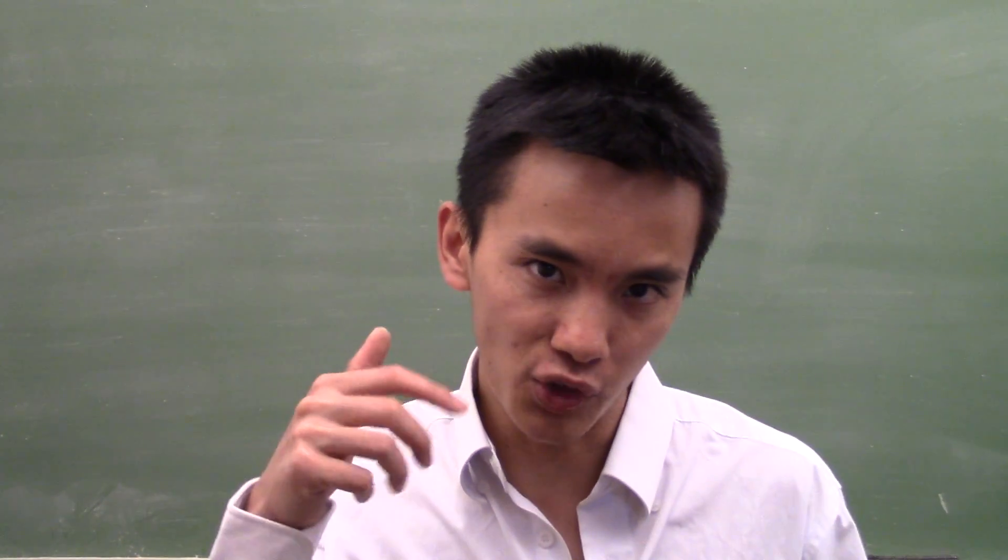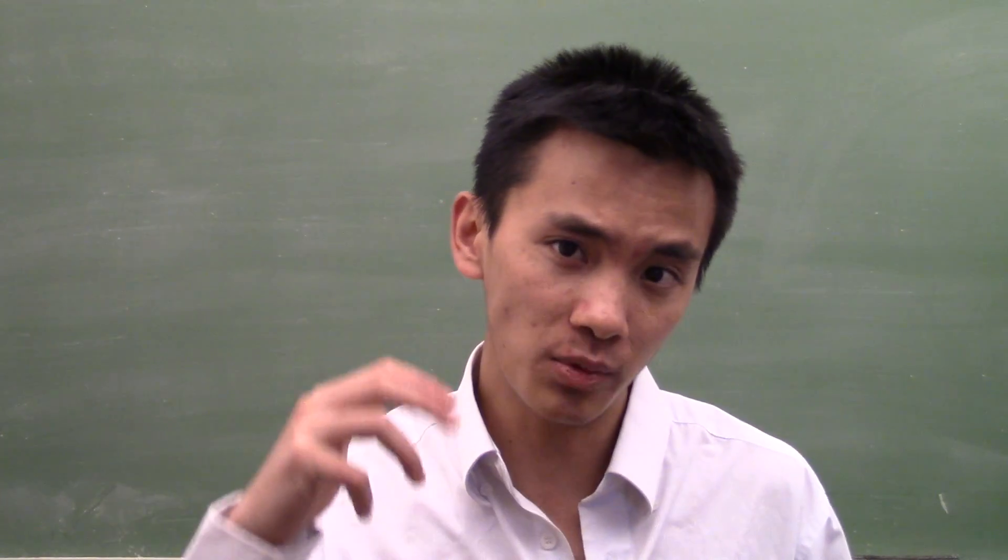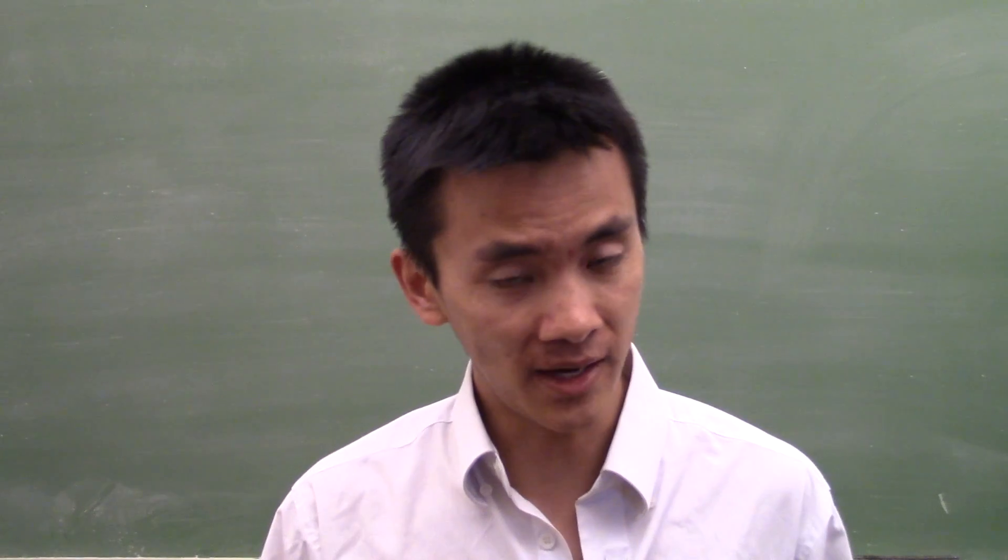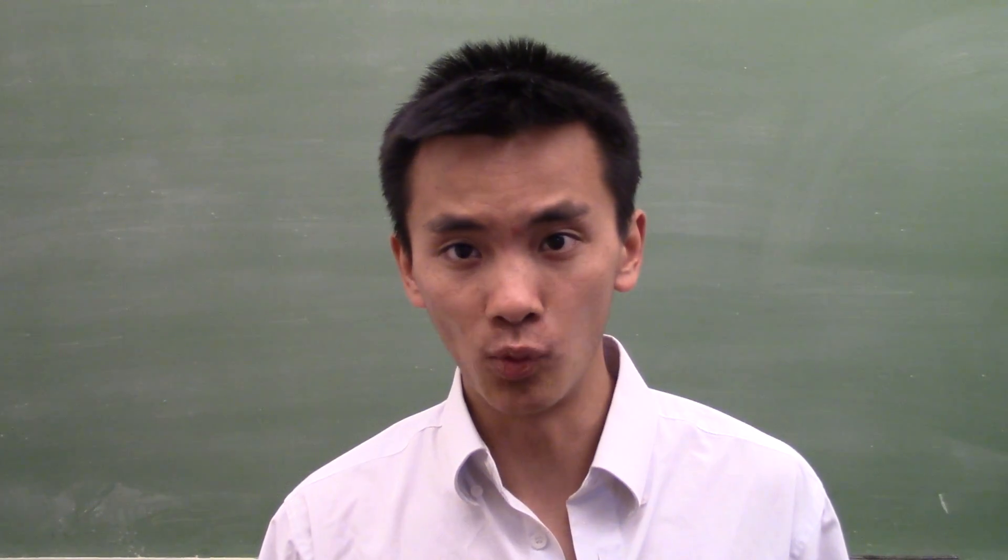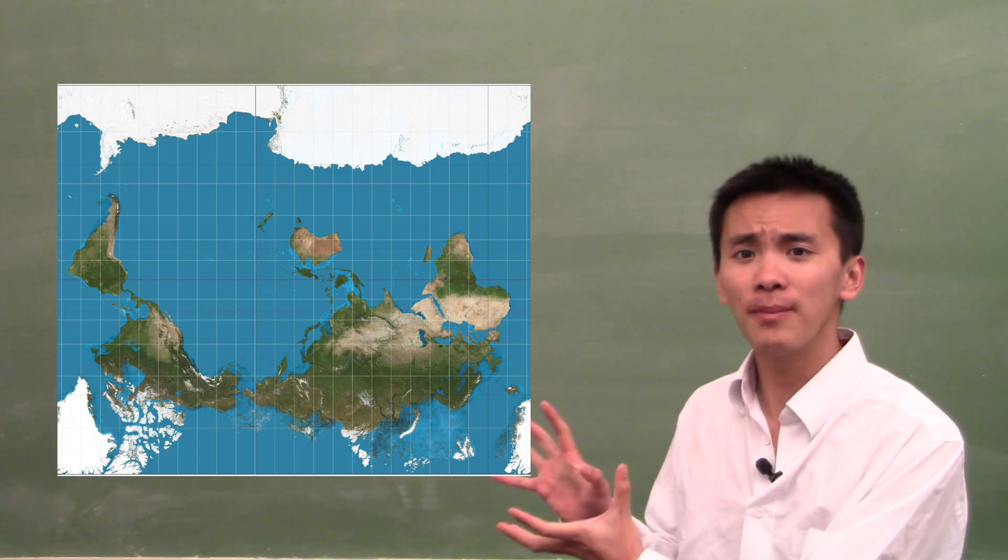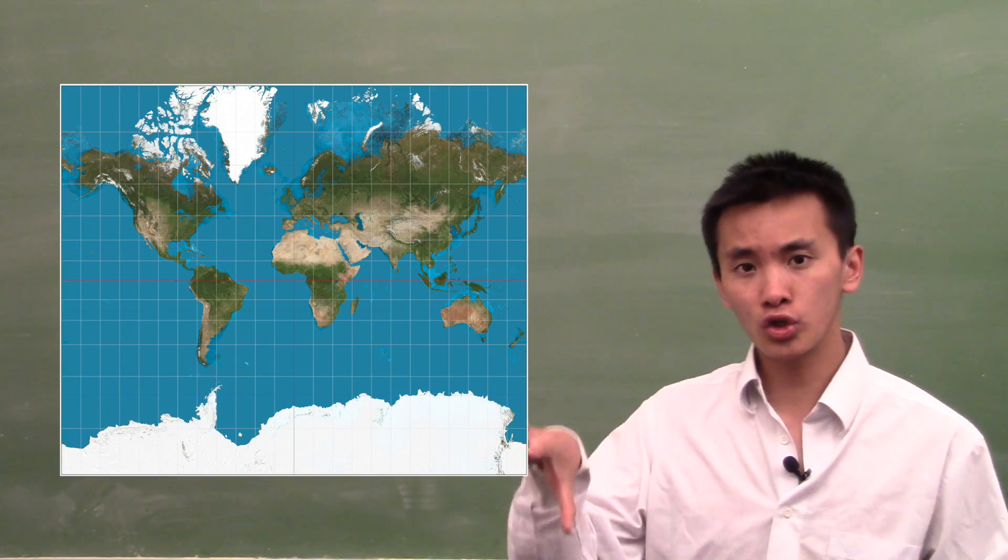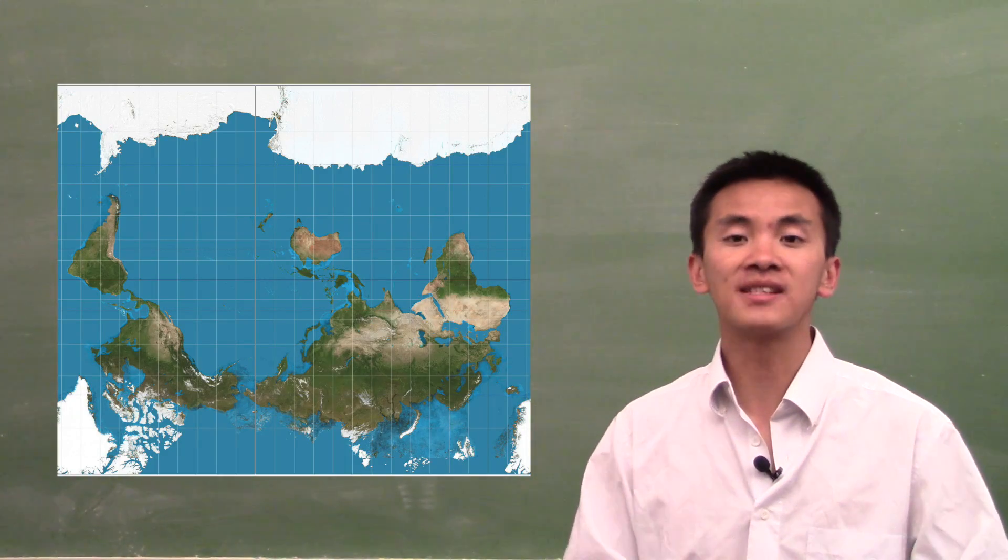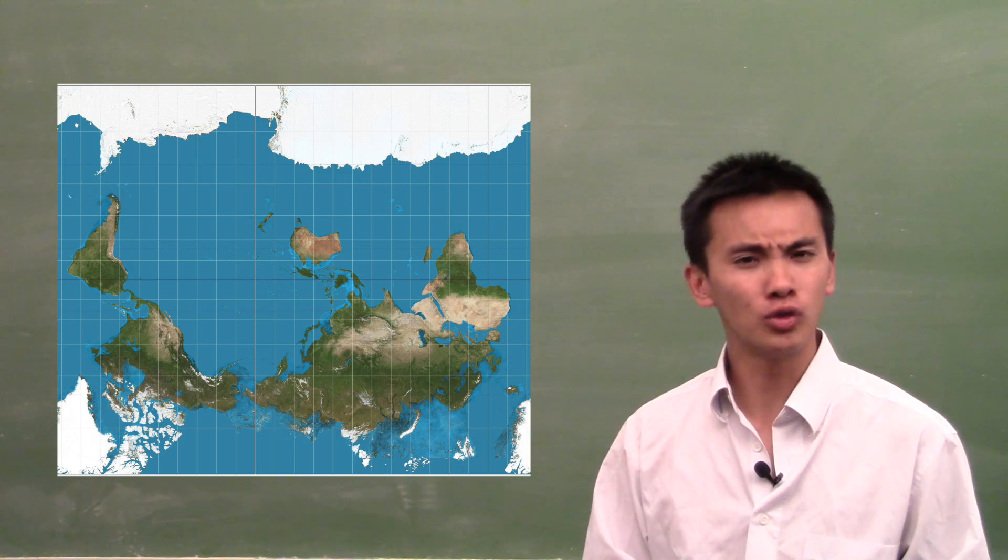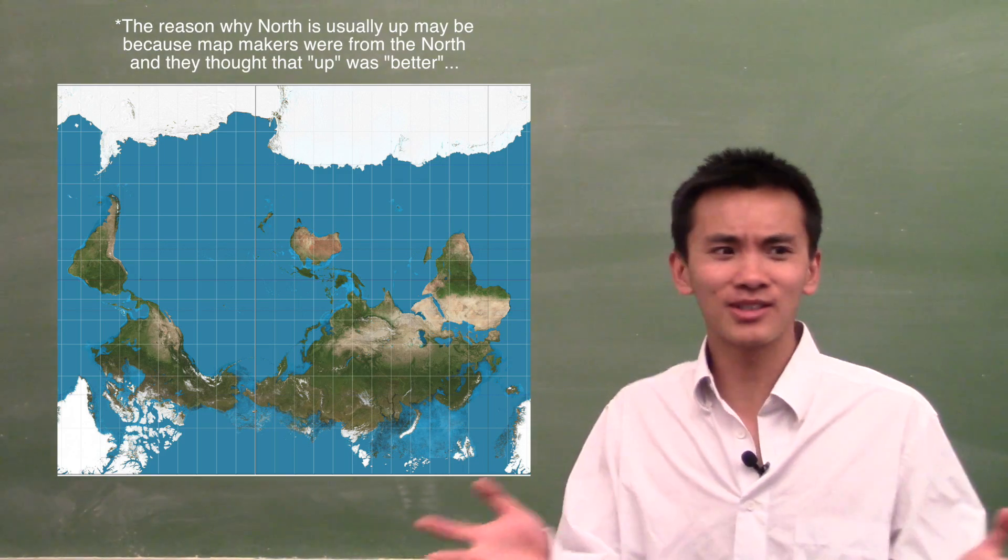The way we see the world affects the way we draw maps, and the way we draw maps affects the way we see the world. Now this map is just our classical map turned upside down and centered on New Zealand. Because why not?